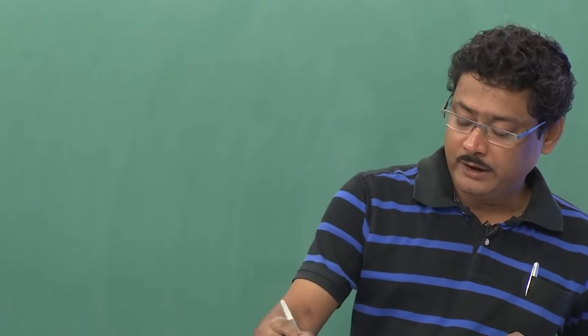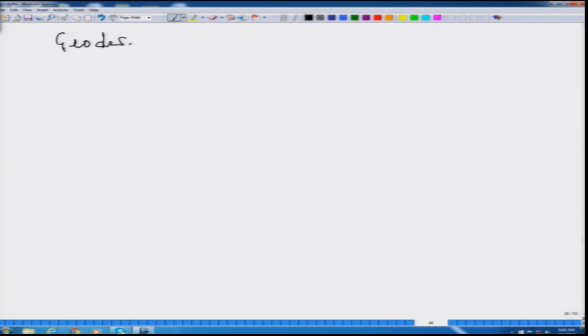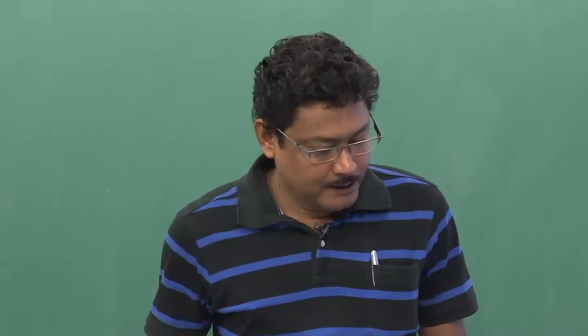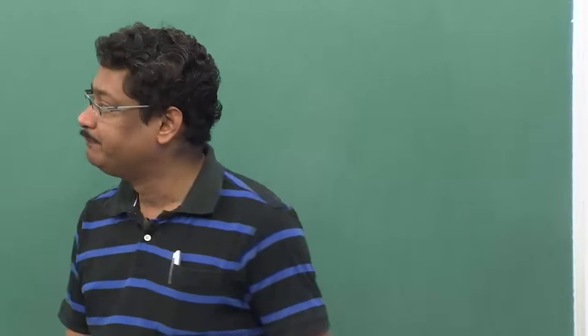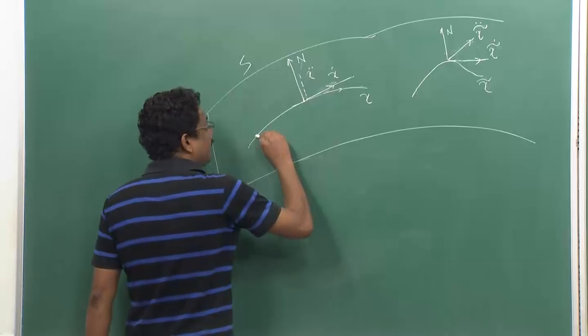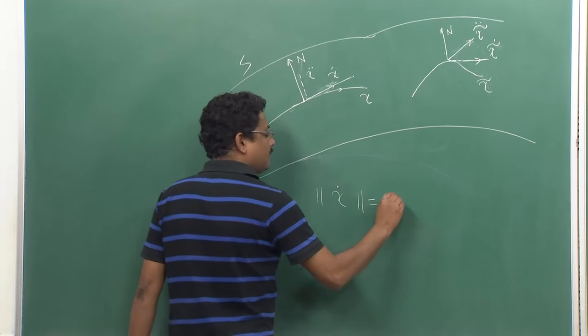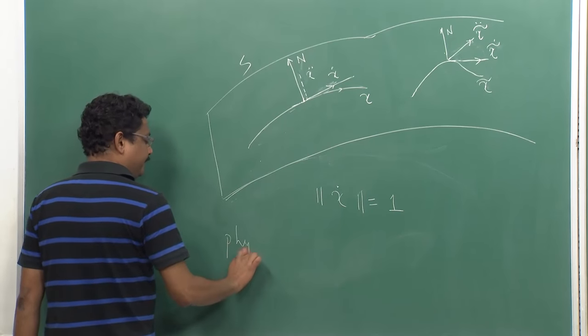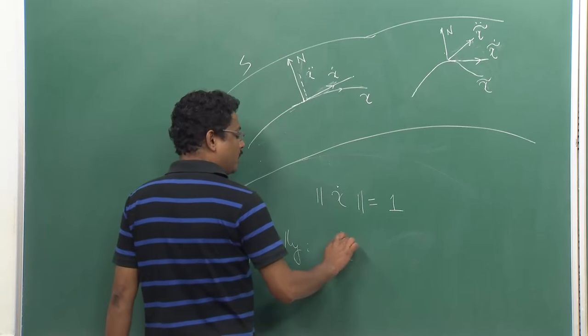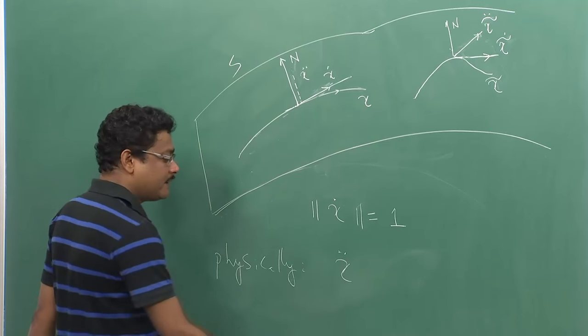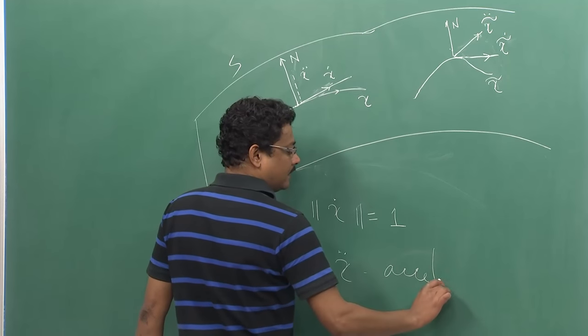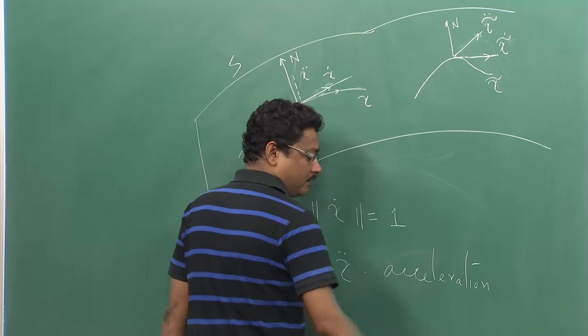Today we will be talking about geodesics. Geodesics are a special class of curves on a surface S. Suppose I am moving on a surface — I have drawn a surface patch on the board and I am moving along a curve gamma. If I move at unit speed, gamma dot is the speed and gamma dot dot, the double derivative, is the acceleration.